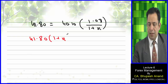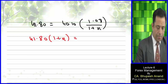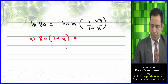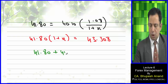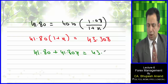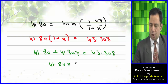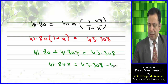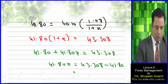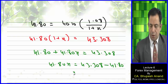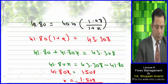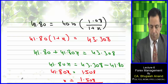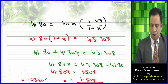So: 41.80 into (1 plus x) equals 43.308. Therefore, 41.80 plus 41.80x equals 43.308 minus 41.80, giving 41.80x equals 1.508. Therefore x equals 1.508 divided by 41.80, which gives 0.03607, i.e., 3.607 percent.